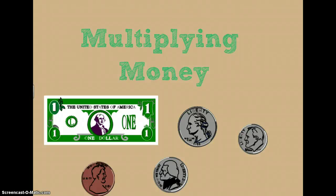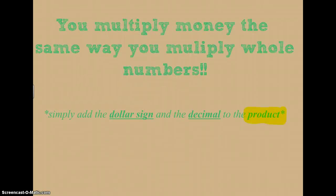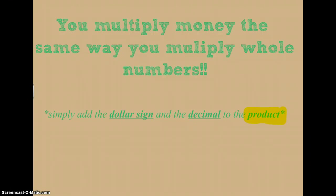Hi fourth grade. Today we're going to be learning how to multiply money. In the past my students have been intimidated by the fact that we're using money rather than whole numbers. But keep in mind that you multiply money the same way you multiply whole numbers — you simply add the dollar sign and the decimal to the product at the end. So since you are all experts at doing multiplication with whole numbers, this should be a breeze for you today.